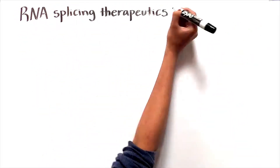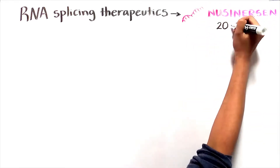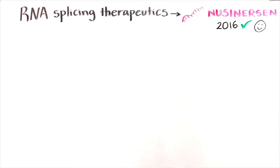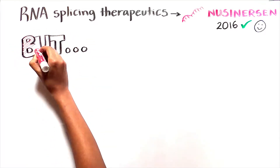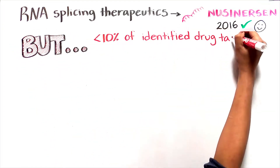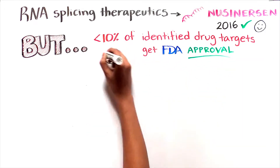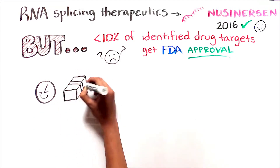Therapeutic development for RNA splicing diseases has produced recent success with the approval of Nusinersen in 2016. While Nusinersen was a success story, generally less than 10% of therapeutic targets identified by biopharma and tested in humans receive FDA approval.